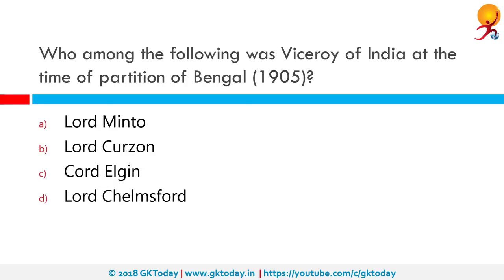Who among the following was the Viceroy of India at the time of the partition of Bengal in 1905? The decision to effect the partition of Bengal was announced on 19 July 1905 by the Viceroy of India, Lord Curzon. The partition took place on 16 October 1905 and separated the largely Muslim eastern areas from the largely Hindu western areas. Bengal was reunited by Lord Hardinge in 1911 in response to the Swadeshi movement.